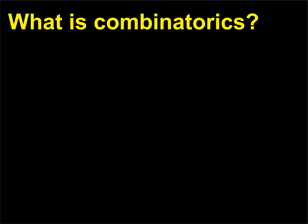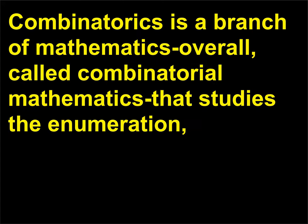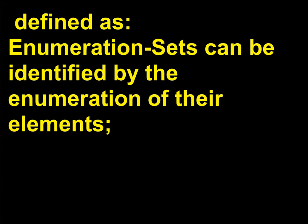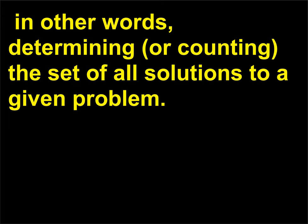What is combinatorics? Combinatorics is a branch of mathematics, overall called combinatorial mathematics, that studies the enumeration, combination, and permutation of sets and the mathematical relations that involve these properties. Defined as enumeration: sets can be identified by the enumeration of their elements — in other words, determining or counting the set of all solutions to a given problem.